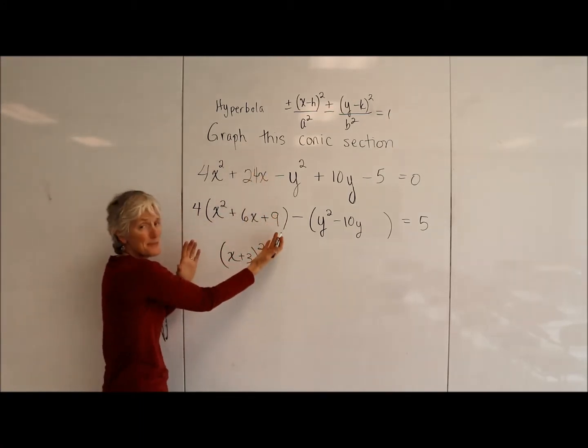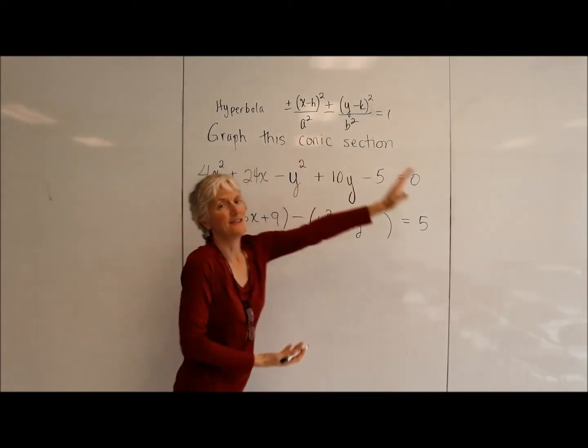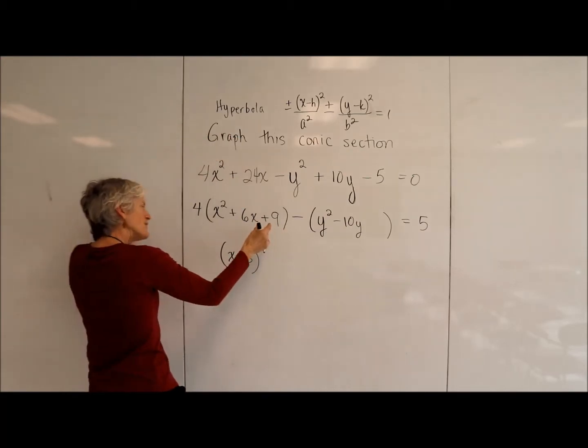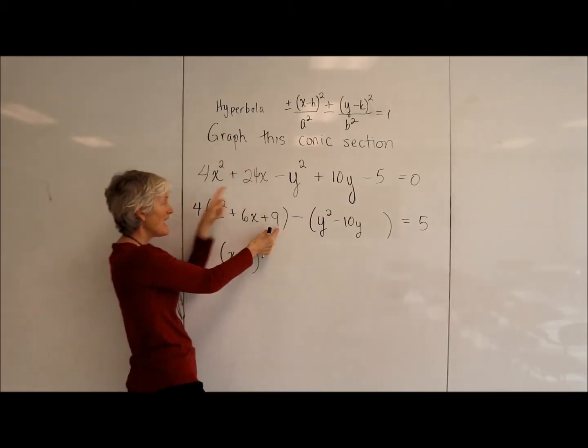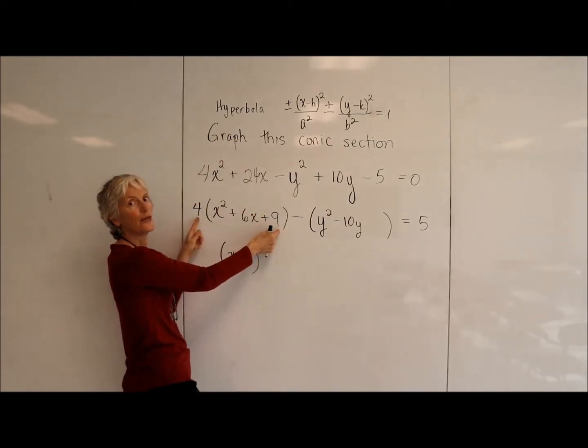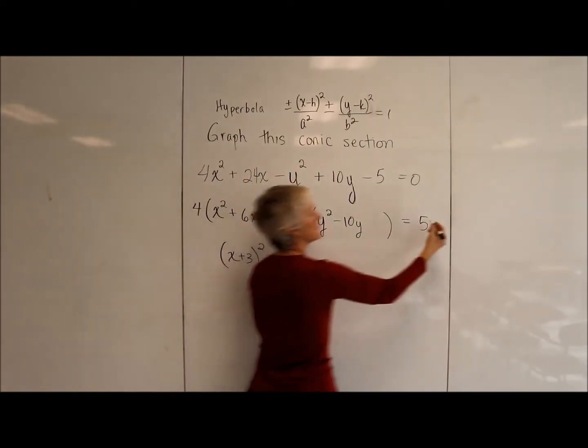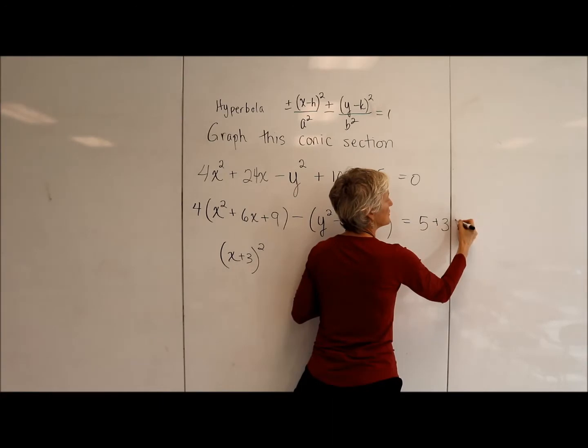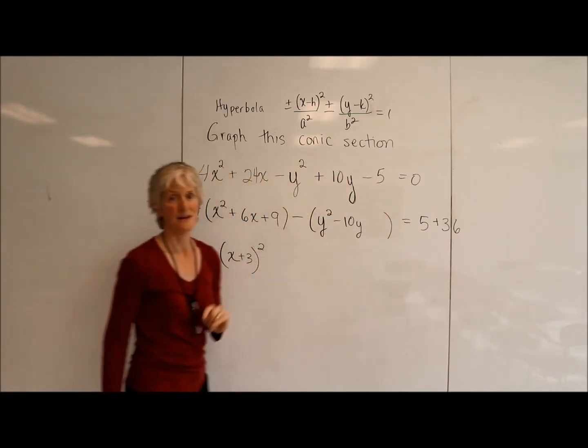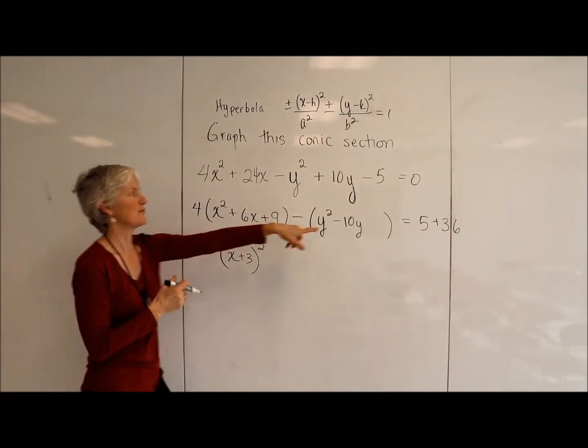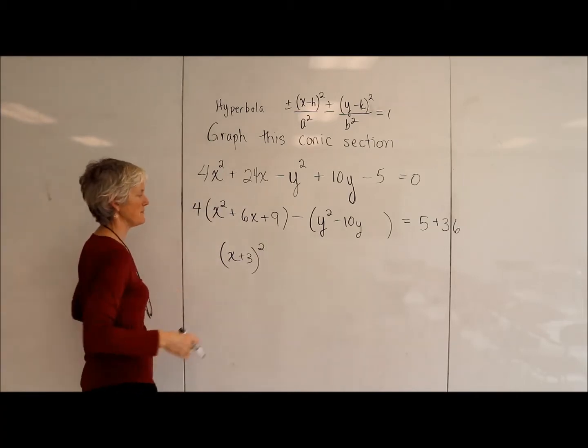But I can't just add something to one side without balancing it. So even though it looks like I added 9, I really added 36. So to keep this equation balanced, I have to add 36 to the other side. Of course, I could subtract 36 from this side, but I'm just going to do it this way.